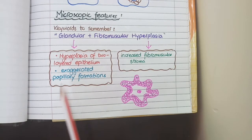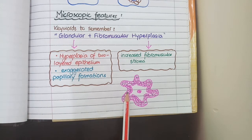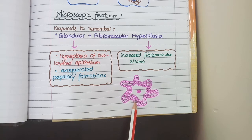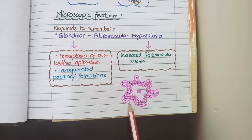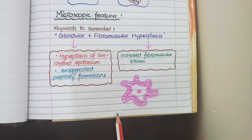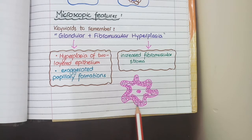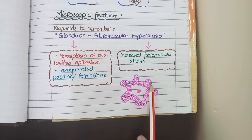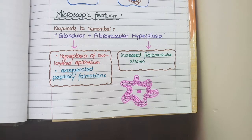Regarding the glandular component, even in the normal prostate gland, the lining epithelium is made up of two layers of cuboidal to columnar epithelium. In benign prostatic hyperplasia, these two layers are maintained, but there is hyperplasia so the quantity of cells is increased. This crowding of cells causes exaggeration of finger-like papillary projections of the prostate glands, which are present even normally but become exaggerated in BPH.